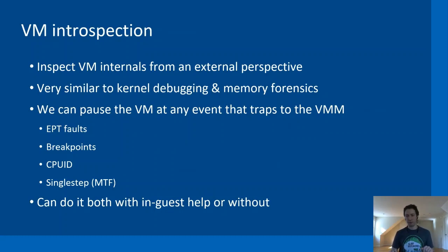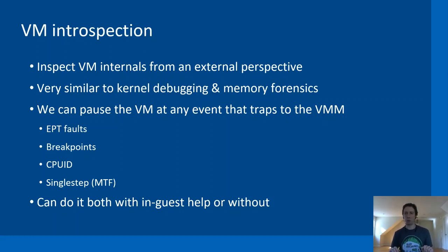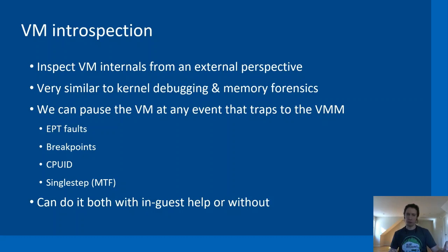Introspection is the idea of looking into the runtime of a virtual machine from an external perspective, in this case using the hypervisor. Think of it as a combination of live kernel debugging and memory forensics, where we have access to the entire memory footprint of the VM and also the hardware state. We can pause the VM and examine the vCPU state. Events configurable via the hypervisor include EPT faults, breakpoints, CPUID, and single stepping — all of which we use heavily in our fuzzing exercises.